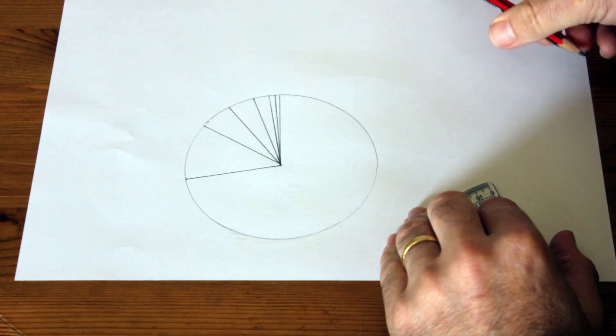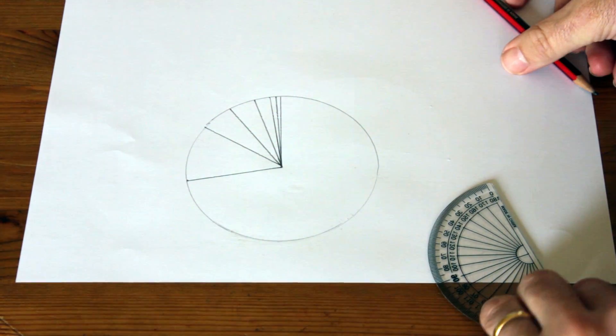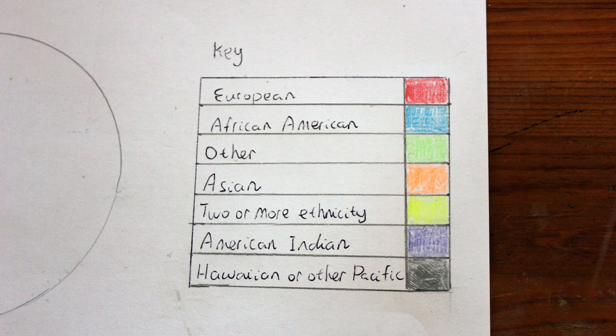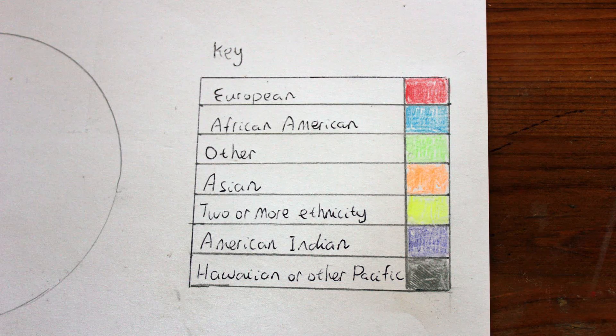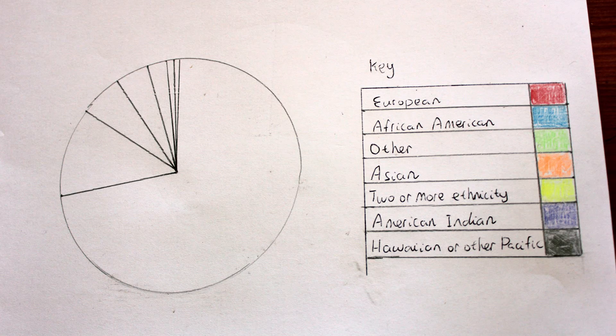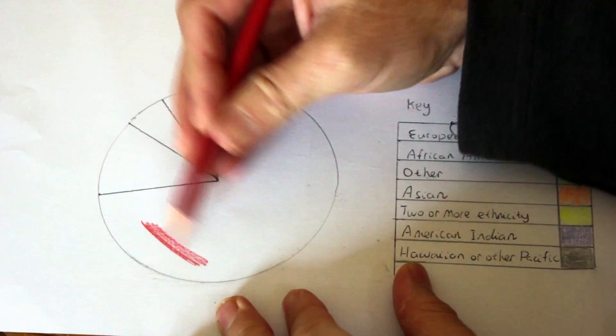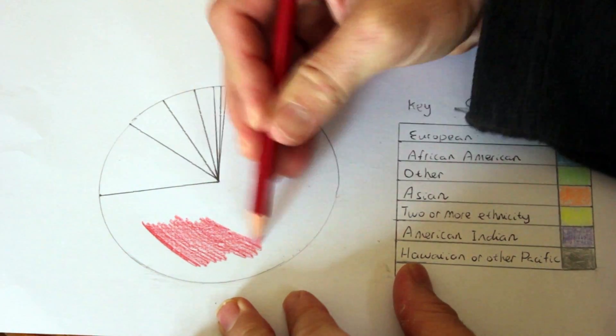That's the last segment there. Now we're ready to shade it in and draw a key. Make a key with shades for each ethnic group and shade in the colors of each segment. It's time to shade in our largest segment, which is European.